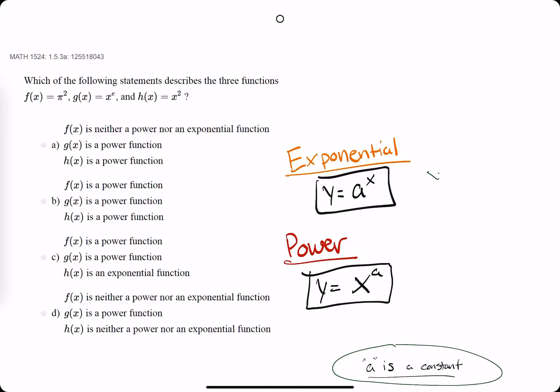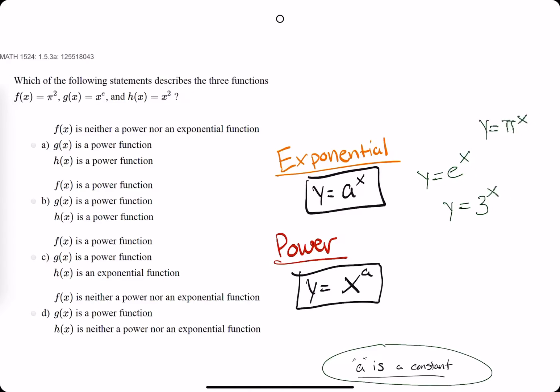So for example, we could have y equals e to the x, very popular, y equals 3 to the x, y equals pi. Pi is a number to the x.